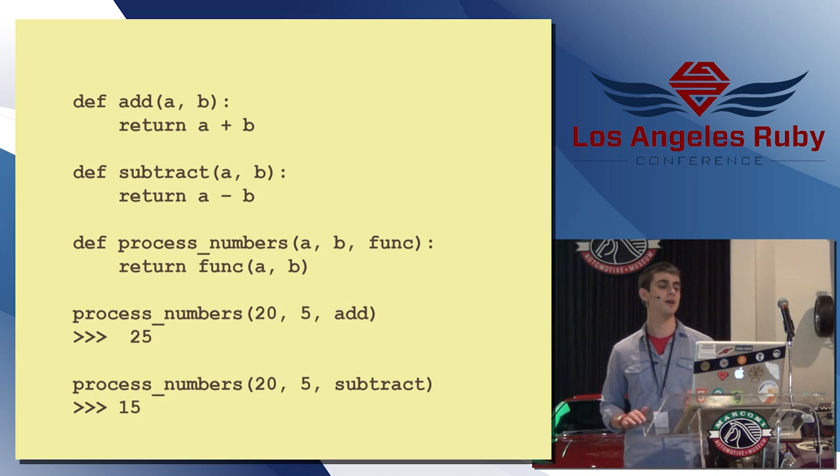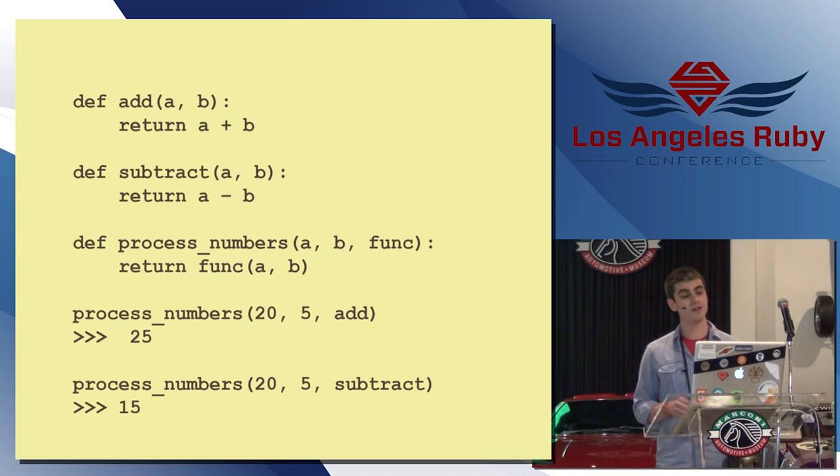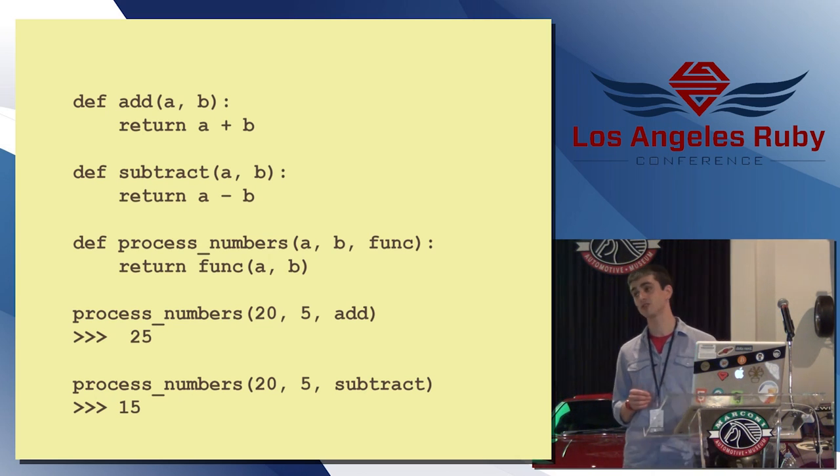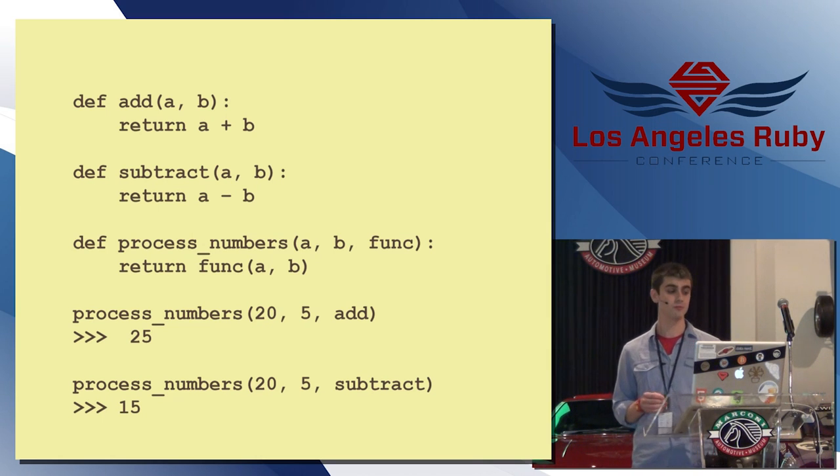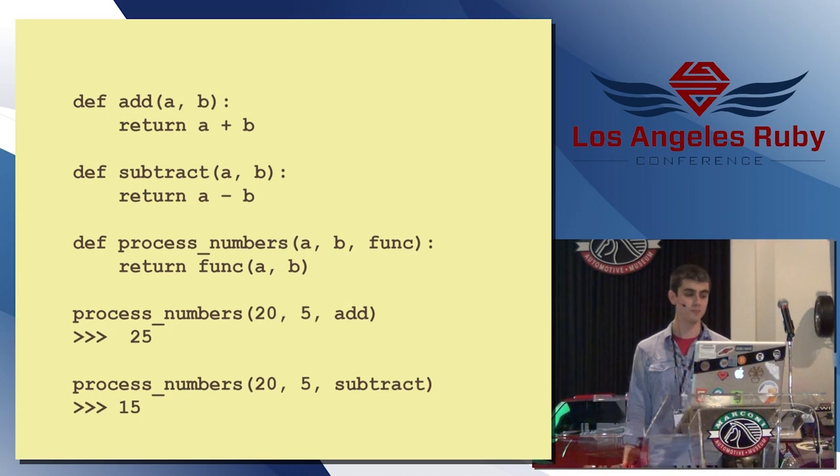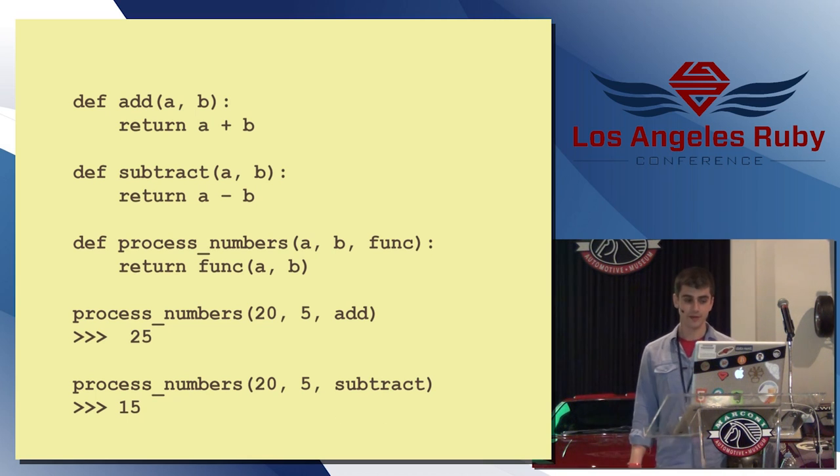So, for example, here I created an add function that just takes two numbers of parameters, it returns the sum. There's a subtract function that takes two parameters and returns the difference. But now I've added an additional third function, processNumbers, that takes two numbers and a function as an argument, and that will apply that function to the two numbers. So here you see I can call processNumbers with 25, pass in the add function, and it will apply that to those parameters, so you get 25. Similarly, you can pass in subtract, processNumbers, and it will be 15.